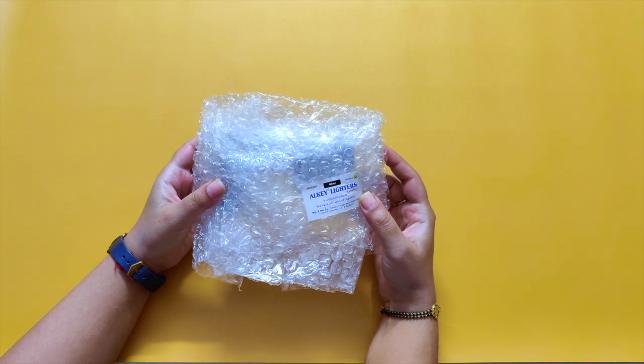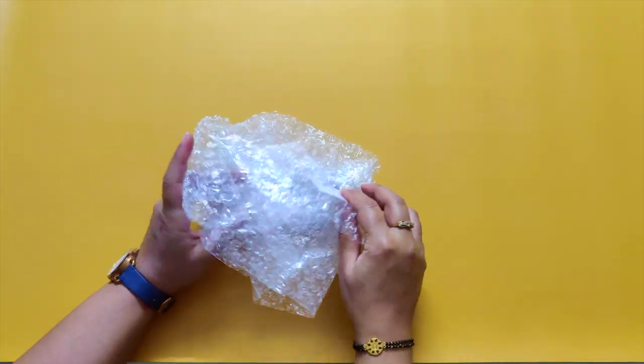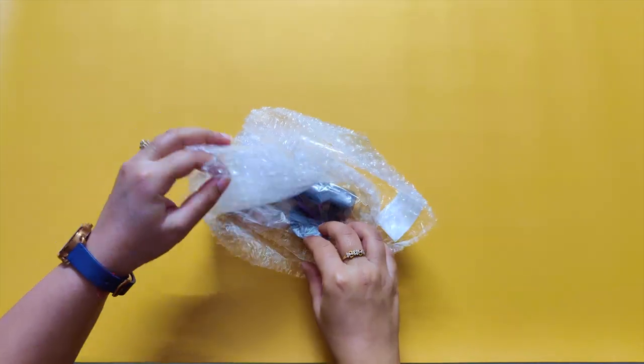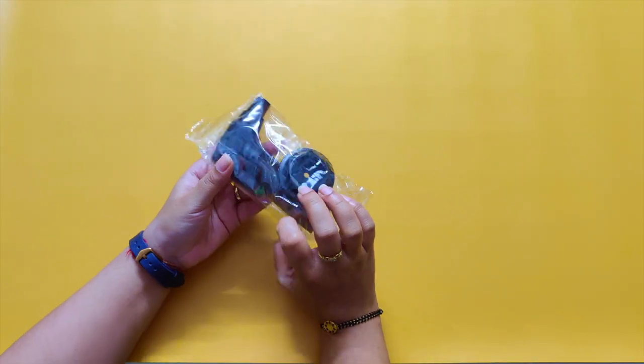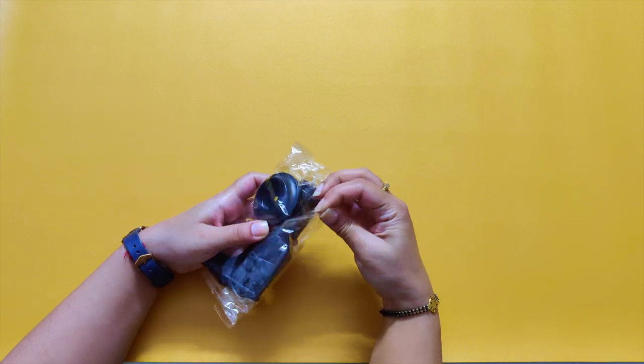Hi guys, today I will be reviewing the Alky Butane Lighter. Let's start with its unboxing. This comes in bubble wrap and has no box. We bought it from Amazon for Rupees 400. You can find the link to the product in the description box.